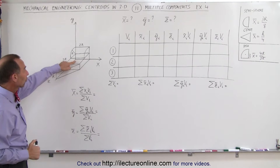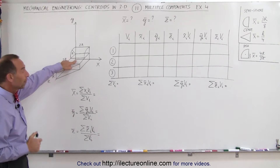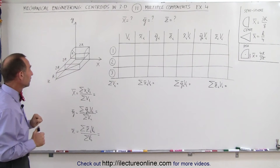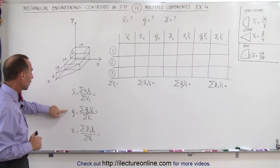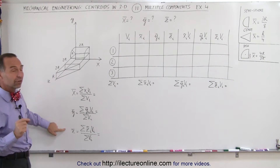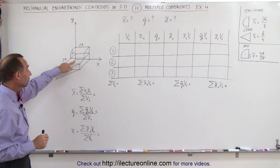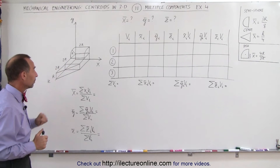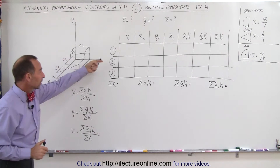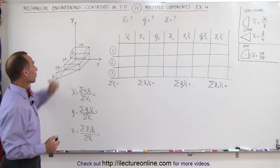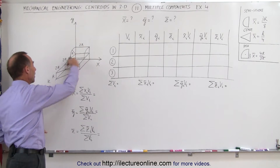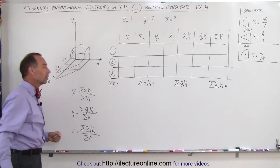Notice the origin is in the far back left corner at the bottom. We need to find the x, y, and z coordinates of the centroid relative to that origin. The positive x direction is this way, positive y direction this way, and positive z direction this way.